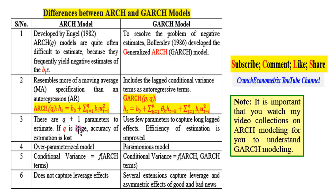The ARCH model contains Q plus one parameters to estimate. In essence, if Q is large, accuracy of estimation is lost. The GARCH model, on the other hand, uses few parameters to capture long lagged effects, and by that, efficiency of estimation is improved. The ARCH model is an over-parameterized model, while the GARCH model is a parsimonious model.